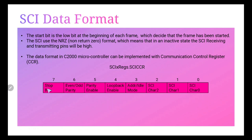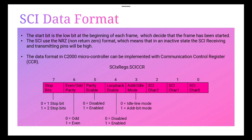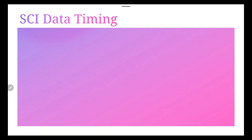The SCICCR is a 16-bit register where the upper 8 bits are reserved. In the lower 8 bits: bit 7 is stop bits, bit 6 is even/odd parity, bit 5 is parity enable, bit 4 is loopback enable, bit 3 is address/idle mode, and bits 2, 1, and 0 define the character format — how many character bits to send. Setting bits 2-0 to 0b000 sends 1-bit characters; setting them to 0b111 assigns 8-bit characters. How to initialize this register will be covered in upcoming videos.